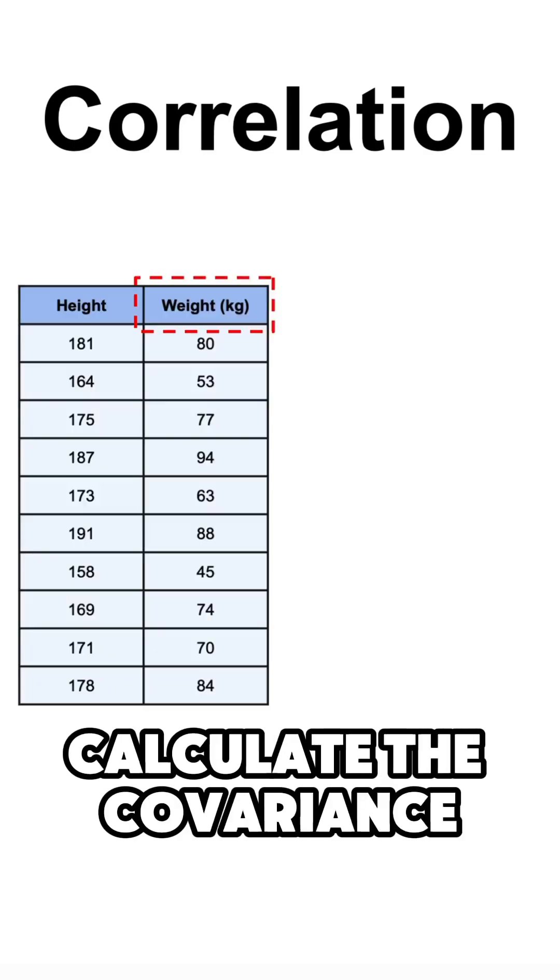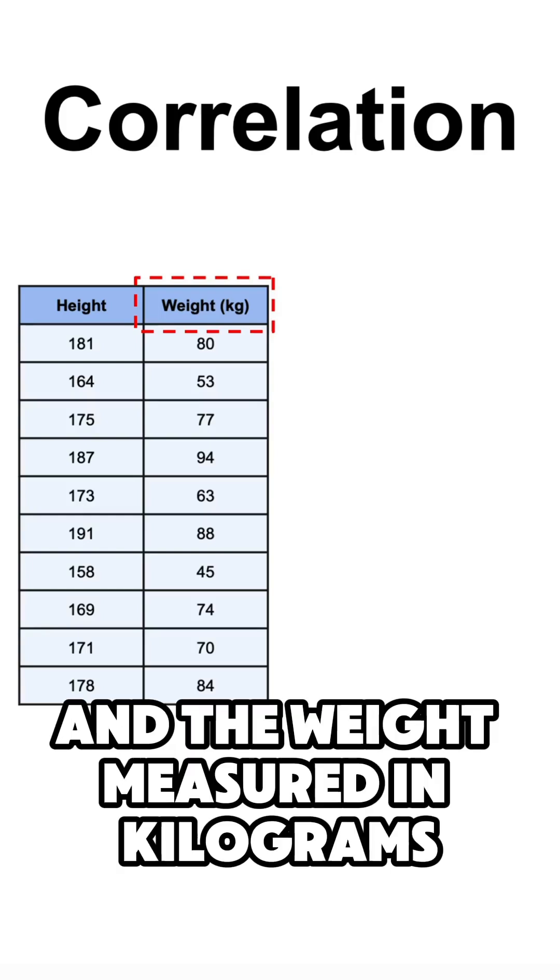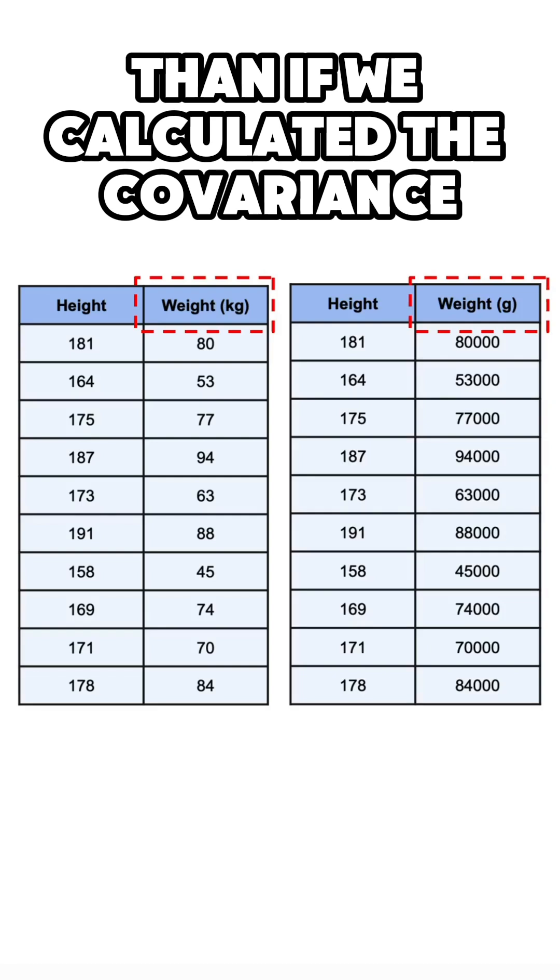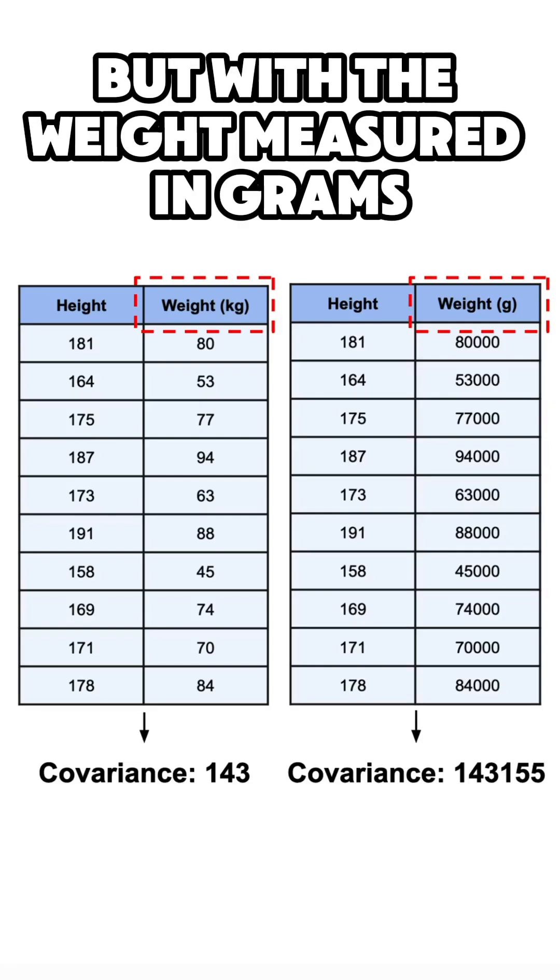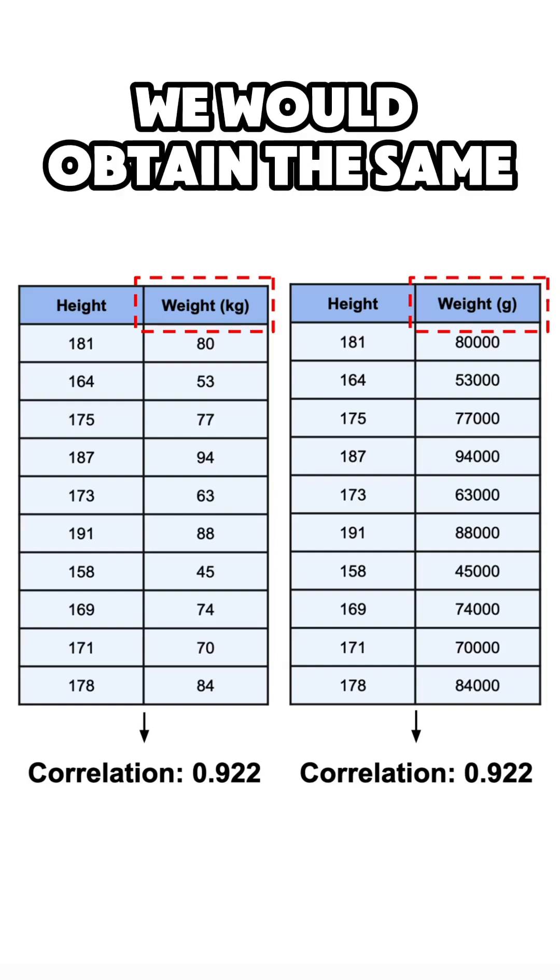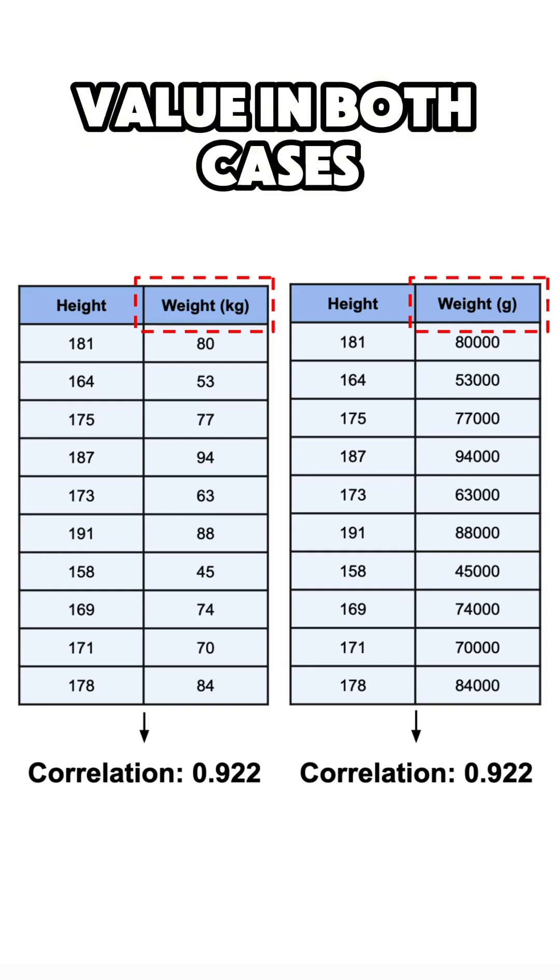For instance, if we calculate the covariance between the height and the weight measured in kilograms, we would get a different value than if we calculated the covariance but with the weight measured in grams. However, if we calculated the correlation, we would obtain the same value in both cases.